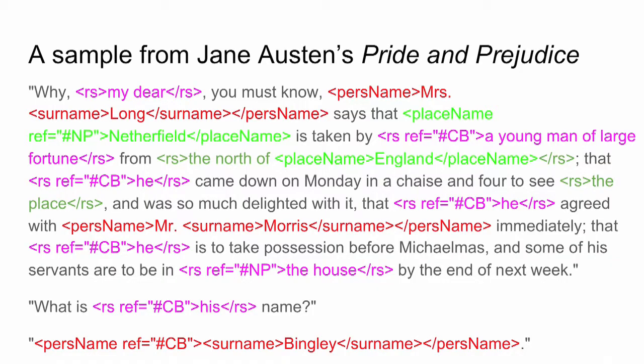Go to the guidelines to see the full range of possibilities to describe a place. So we would have these two lists in the TEI header. Then going back to the text, we have the possibility to add the 'ref' attribute on each mention of Netherfield Park or Charles Bingley — whether it is a persName, a placeName, or a reference string. Here you can see that I point to the description of Netherfield Park and Charles Bingley using the value of their xml:id attribute in the 'ref' attribute of RS, persName, or placeName referring to them.